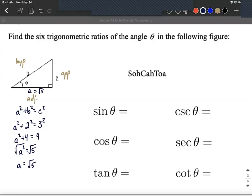Sine is opposite over hypotenuse. So as it's labeled, that's going to be two over three.